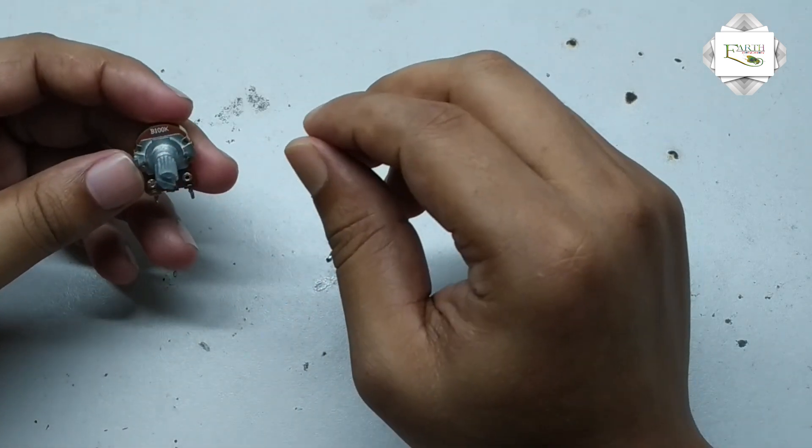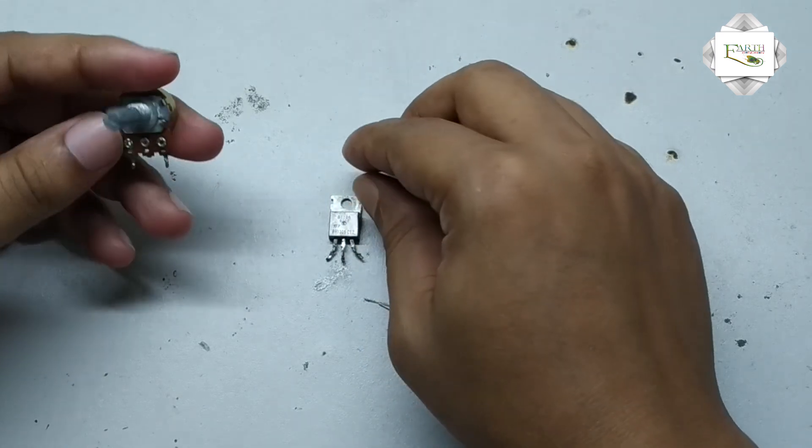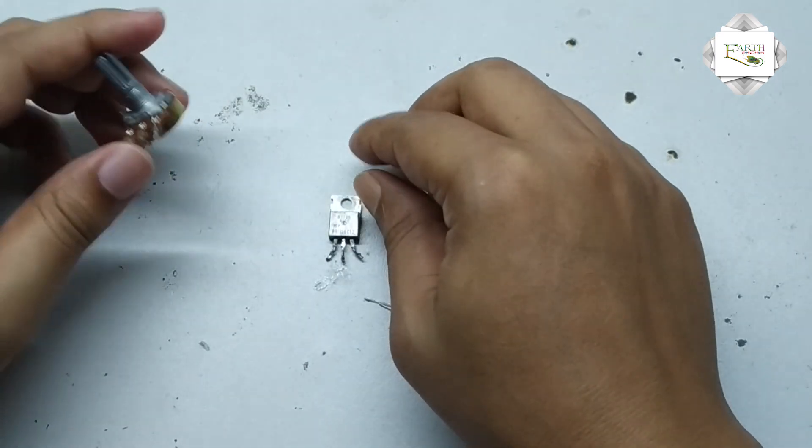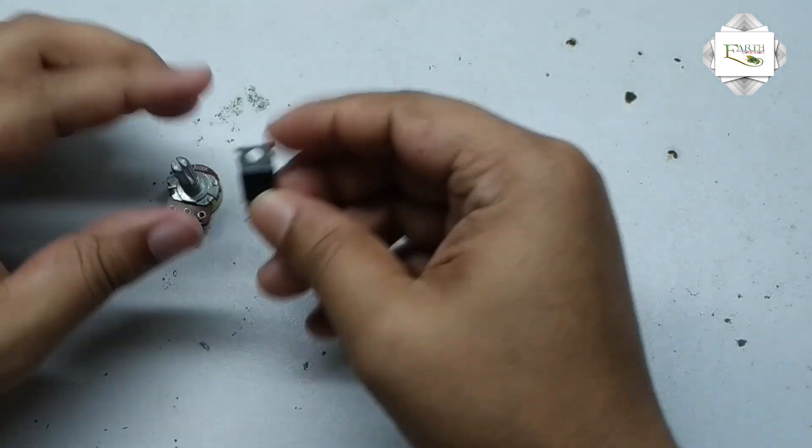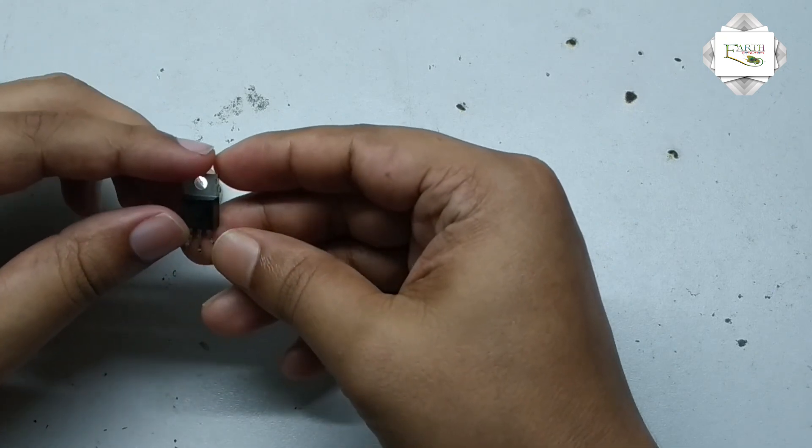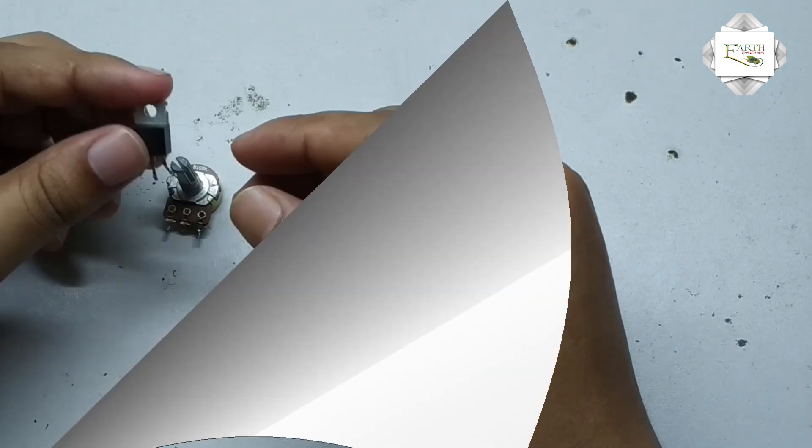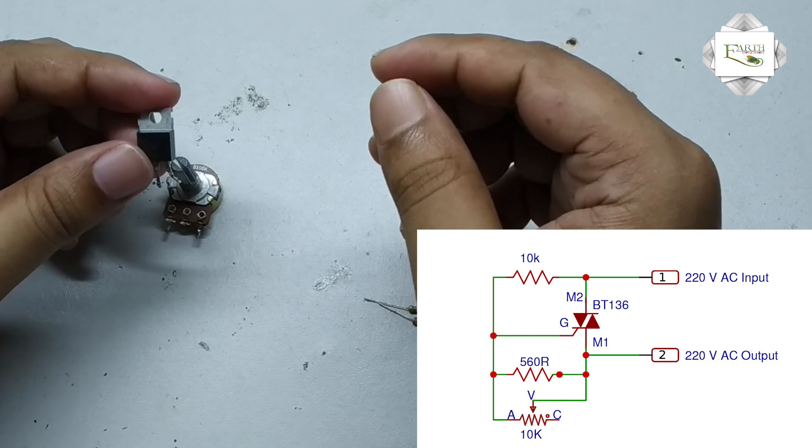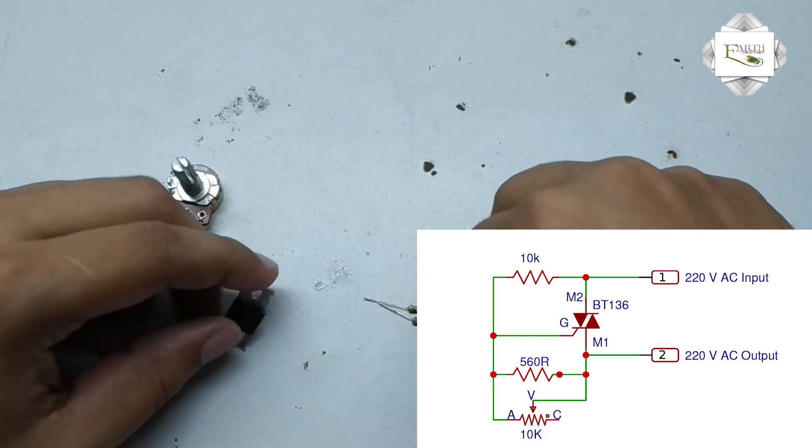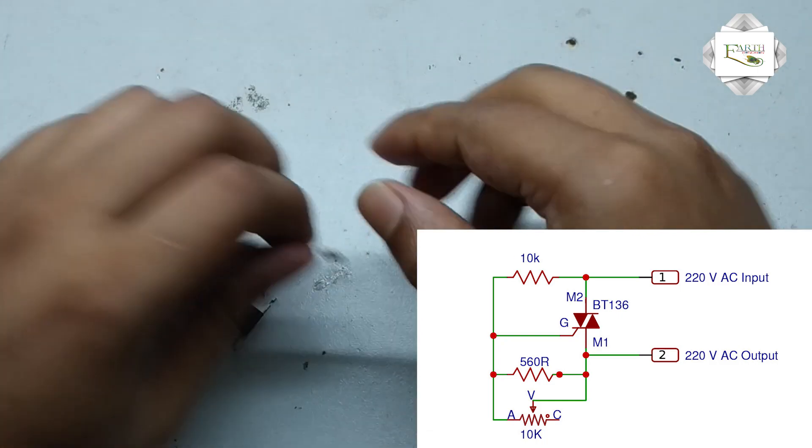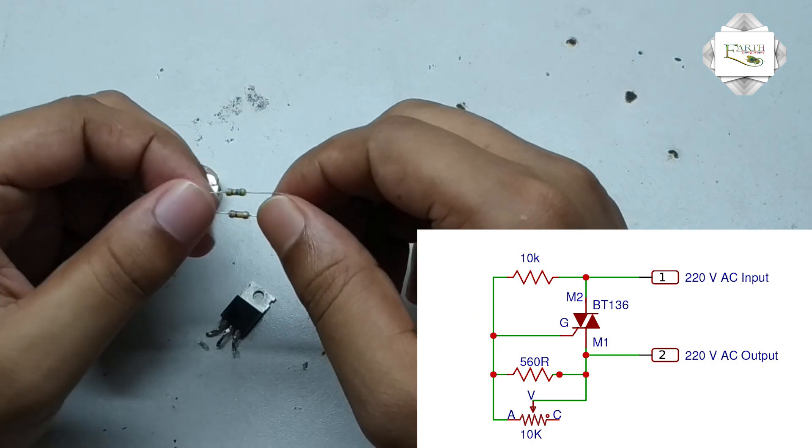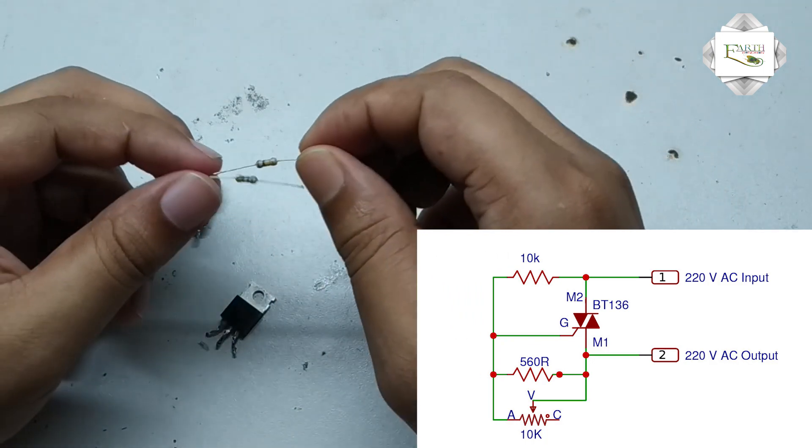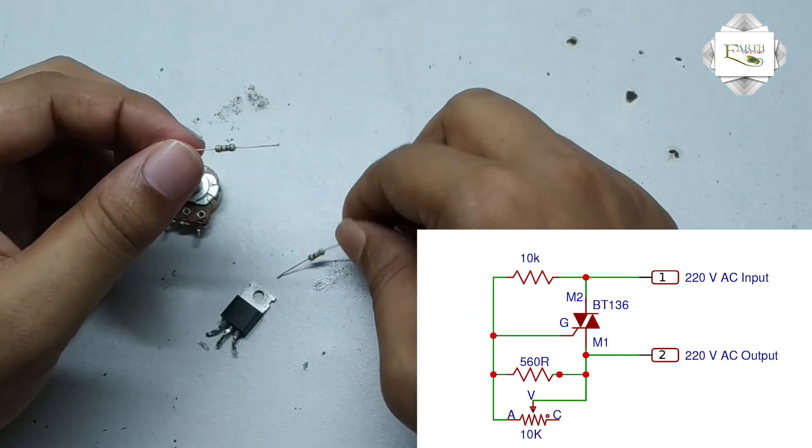And this project also needed an IC BT136, the IC number is BT136, and need to register, and also needed two resistors, one is 100K and another is 560 ohm.